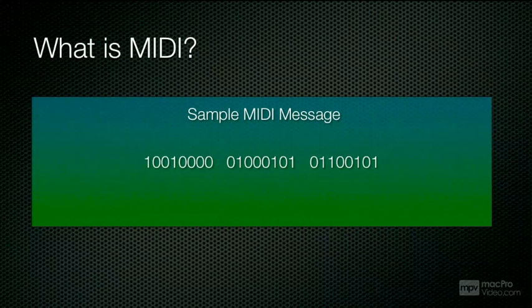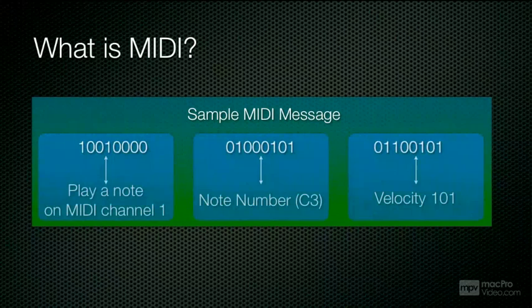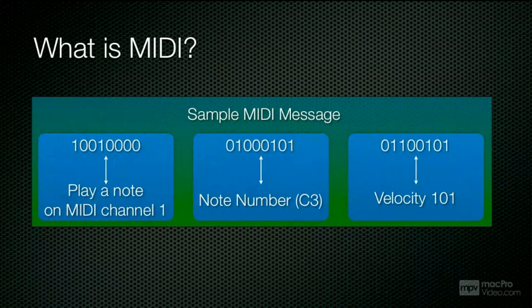What this actually means is to play a note on MIDI channel 1. The note is C3, and the velocity — or how hard we play the note — is 101 out of a possible 127.